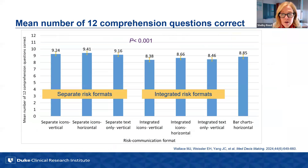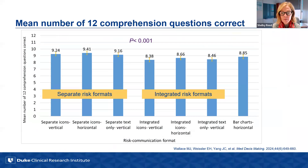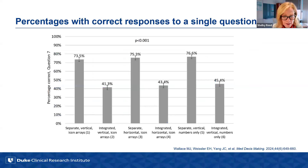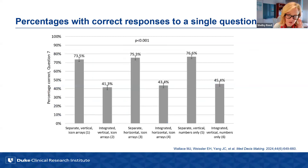Across the 12 comprehension questions, we found a systematic difference between showing risks separately versus in the integrated format — people did better when risks were shown separately. The bar charts came out somewhere in between. There was one question that was particularly difficult for people seeing the integrated information: which device led fewer people to have their symptoms come back by two years. With the integrated formats, people had a really difficult time with that.